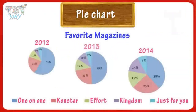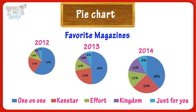Here we have a pie chart for sales across three different years: 2012, 2013, and 2014. The key shows that different colors represent different magazines sold. Each pie chart shows the percentage sale of different magazines in a year. In 2012, 59 percent of users subscribed to One-on-One magazine, and 21 percent subscribed to Chemstar magazine.